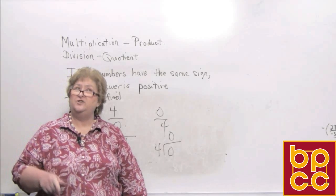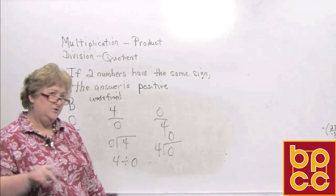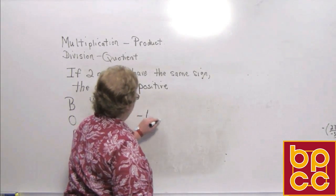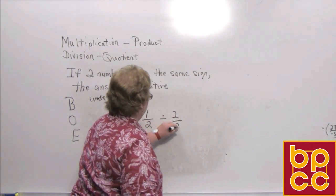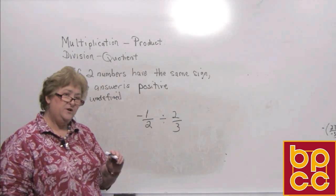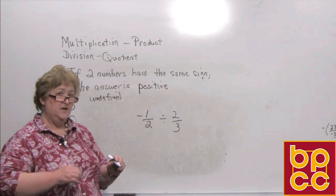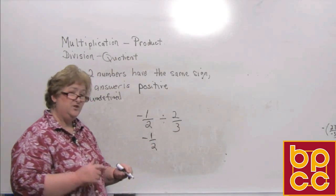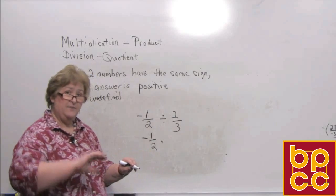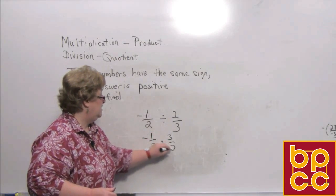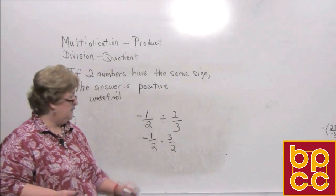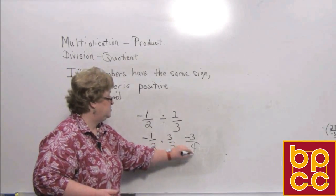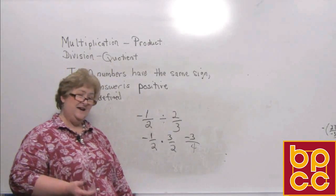Let me try a division problem with fractions. Let's do a negative 1 half divided by 2 thirds. When we do division of fractions, we do keep-change-flip — that's why I mentioned the reciprocal. So I'm going to keep the negative 1 half, change the division to multiplication, and flip the 2 thirds to get 3 over 2. Now multiplying: a negative 1 times 3 is a negative 3, and 2 times 2 is 4. The answer to this division problem is a negative 3 over 4.